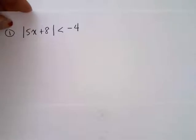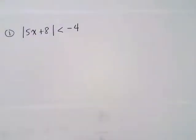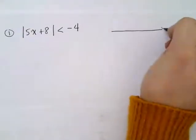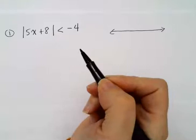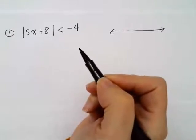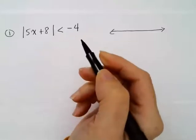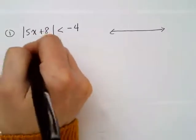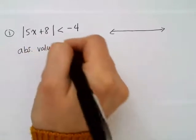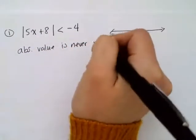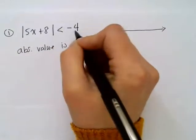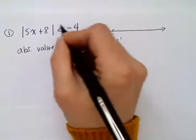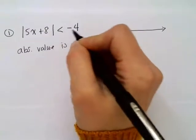I always encourage you to draw a picture of what's going on just to get a sense of the meaning behind any inequality or equation. This statement tells me that the absolute value of something is less than negative 4. Now remember the definition of absolute value: absolute value is never negative. It is either a positive number or it's 0. So it doesn't make sense that an absolute value equals a negative number — and this says it's less than a negative number.